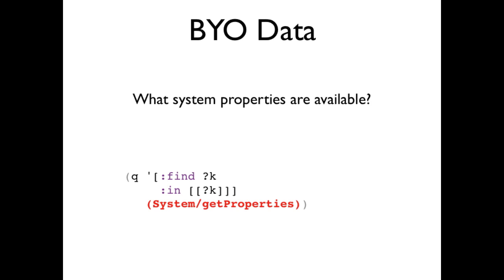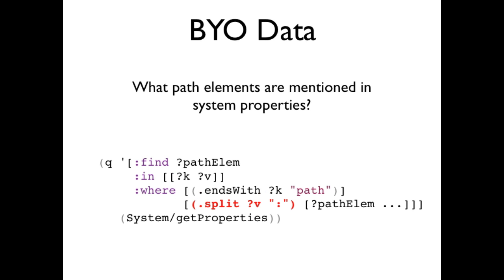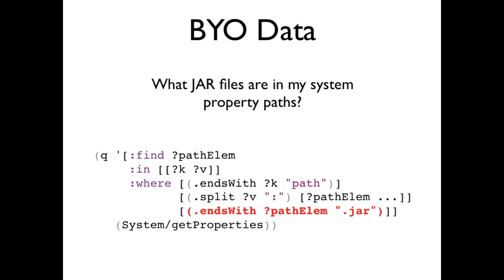In addition to bringing your own functions, you can bring your own data. You can use Datomic's query against any data you happen to have at hand. For example, what system properties are available? Given the system properties, you might call a Java method to find only the property keys that are path-related, and call another Java method to split the paths into path elements, and yet another Java method to constrain the results to JAR files. In short, you can immediately start working at a higher level, logic programming, with all of your existing JVM code and data.